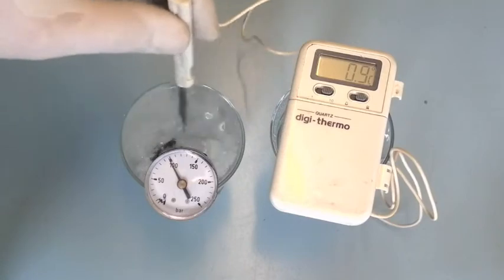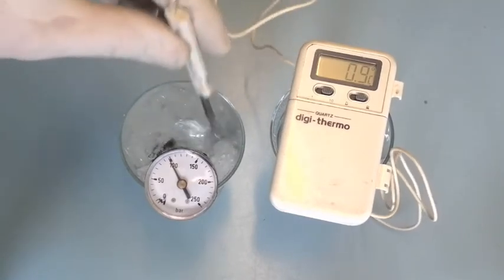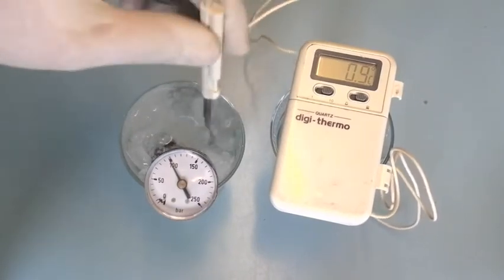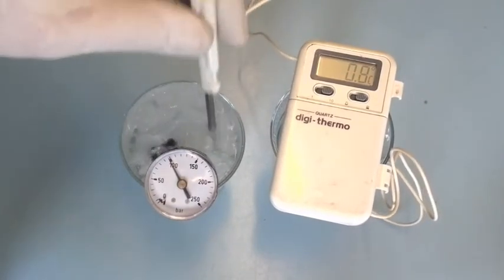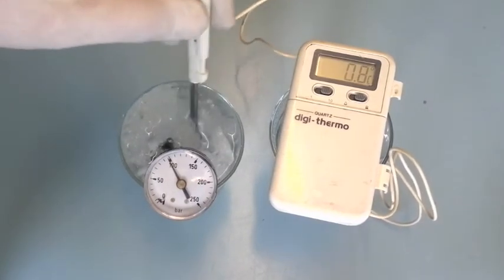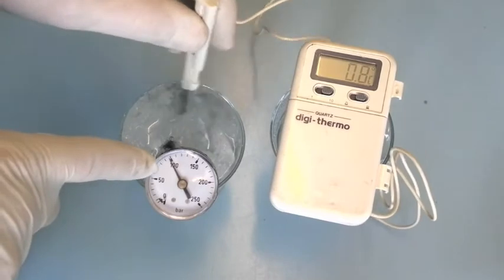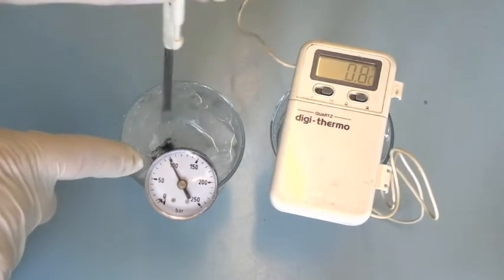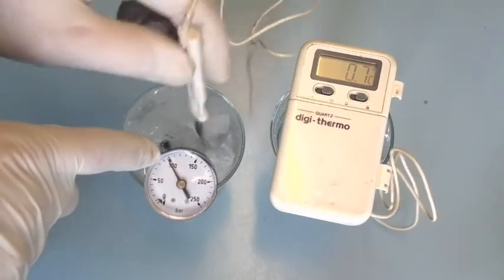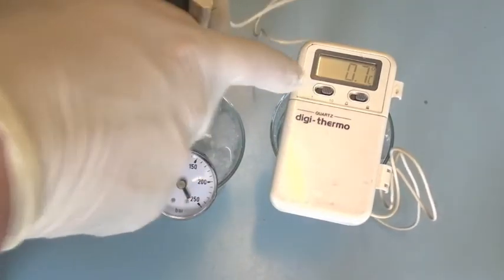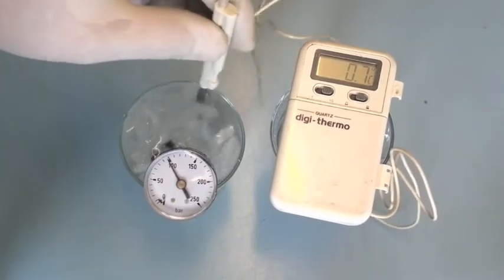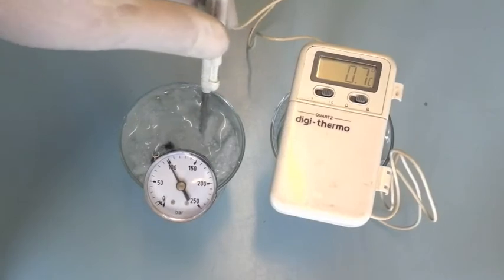So over the past six or seven minutes the temperature in the glass has risen a little bit as the ice has melted. The temperature, hopefully you can see on the pressure gauge, has fallen quite a bit. It's down to about 97, 98 bar, and the temperature gauge is about 0.7.